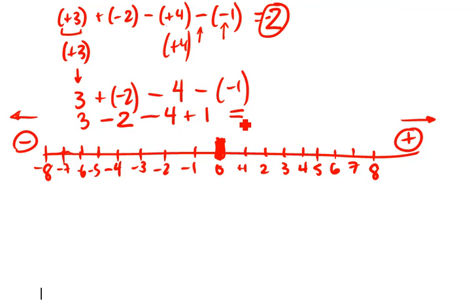So now if we take our number line again, we start at three. We subtract two, brings us to one. We subtract another four. One, two, three, four. And then we add one which means we go back. And we end up at the same answer, negative two.